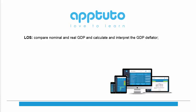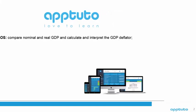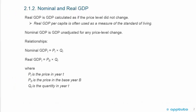This LOS is to compare nominal and real GDP and calculate and interpret the GDP deflator. First we'll start by looking at nominal and real GDP. Real GDP is GDP calculated as if the price level did not change. Real GDP per capita is often used as a measure of the standard of living.